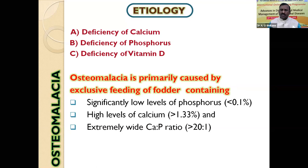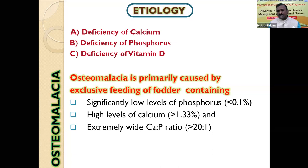High calcium in the soil and high calcium in the diet is another problem. In general, roughages — both dry and green — are rich in calcium at levels around 1.33%, which is three times more than the requirement of the animal. The requirement of calcium for the animal is 0.4 to 0.6%, whereas in the diet it is much higher. The phosphorus requirement is about 0.3%, but in our fodder it is less than 0.1%. So our forages are highly deficient in phosphorus but rich in calcium, resulting in a very wide calcium-to-phosphorus ratio.